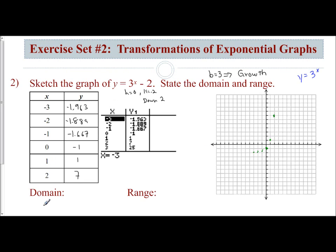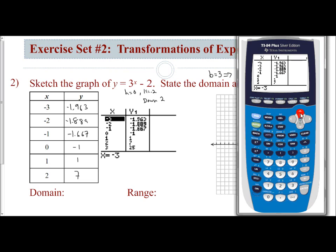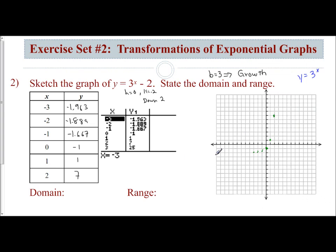I can even check that out with my calculator. If I were to scroll up, you notice it's approaching negative 2. And so I'm going to start my curve at y equals negative 2. I'm not going to cross it. It's going to come up. Smooth curve all the way up and through the points. And so there's my graph.